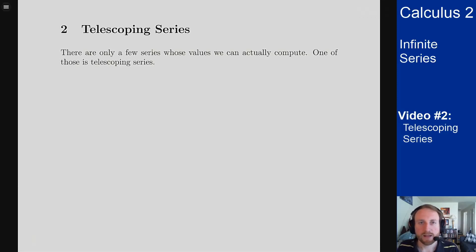In this video we'll talk about telescoping series, which is one of the few types of series that we can actually evaluate to get a number as to what the sum of the series is. There's really only two main types of series that we can actually evaluate to a number, and those are telescoping series and geometric series.